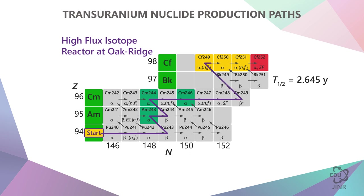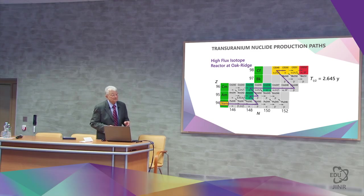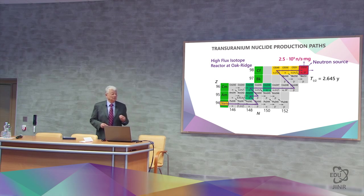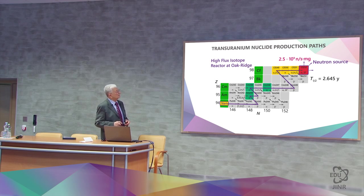The californium is accumulated. The purpose of this reactor is to obtain californium-252, which works as a neutron source. Its half-life is 2.5 years, and one milligram of this californium gives 2.5 times 10 to the power of 9 neutrons per second.